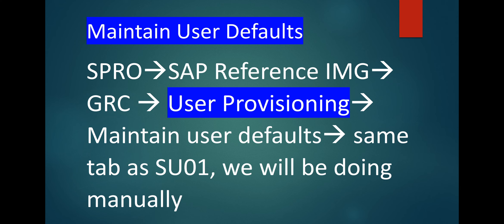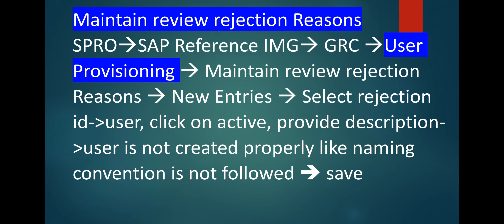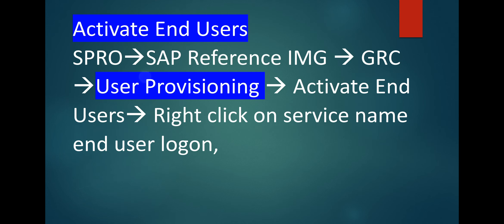Next option is maintain user default — go to user provisioning, same tab as SU01, we will be doing manually. Next, maintain review rejection region — go to user provisioning > Maintain Review Rejection Region, click on new entry, select rejection ID 'User', click on activate, provide description such as 'User is not created properly' or 'Naming convention is not followed', then save it. Next is maintain password self-service — if a user forgot their password, a few security questions will prompt for password reset. Click on new entry, fill it in, click save, then click on folder > Challenge Response Question > New Entries, write the question and make it active.